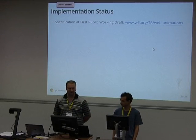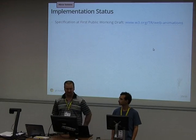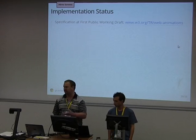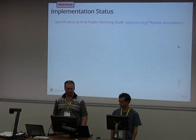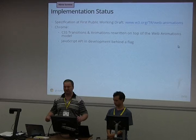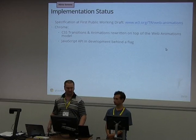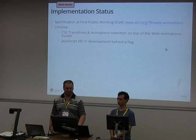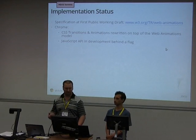To explain where we're up to in development: a draft specification is available and people are reviewing it — we'd welcome feedback from any of you. In Chrome, we've started implementing, re-implementing CSS transitions and animations on top of the model we've described. This is seamless for end users — they won't have noticed. Instead of having a separate animation engine for CSS transitions and a separate one for CSS animations, we've retired those and implemented one unified animation engine. We're planning to extend that to support SVG as well, retiring the SVG animation engine too. We're working on the JavaScript API, which requires enabling a flag in Chrome.